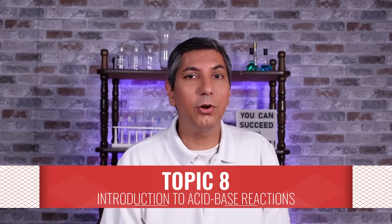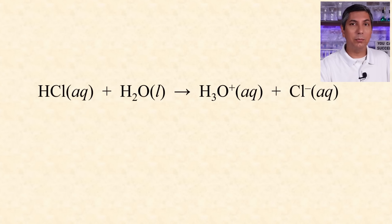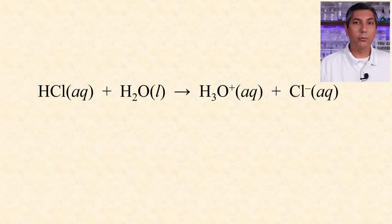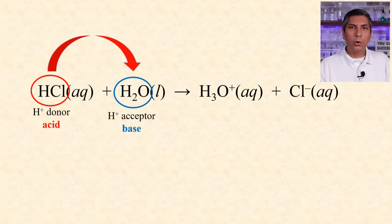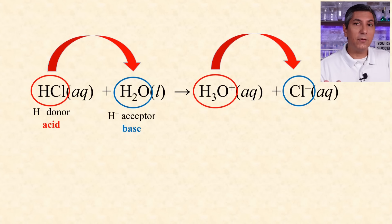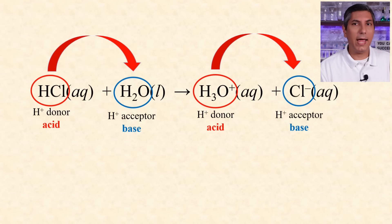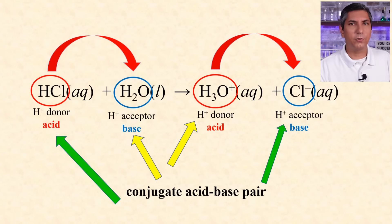The Brønsted-Lowry definitions tell us that an acid is a proton donor and a base is a proton acceptor — a proton is just an H+ ion. In this example, hydrochloric acid reacts with water to produce hydronium ions and chloride ions. Hydrochloric acid is donating the H+, so it's an acid, and since water is receiving that H+, it's a base. If the reaction were going in reverse, chloride would be receiving protons so it's a base, while hydronium donates the H+ so it's an acid. We group these into conjugate acid-base pairs — two acid-base pairs for every reaction like this.